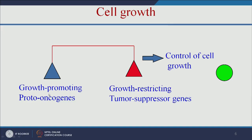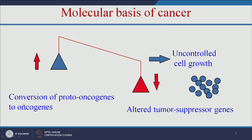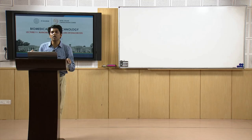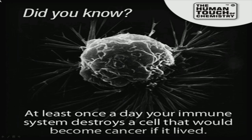Growth-promoting proto-oncogenes and growth-restricting tumor suppressor genes should be properly balanced for control of cell growth. If there is an imbalance, conversion of proto-oncogenes to oncogenes happens and leads to altered tumor suppressor genes, resulting in uncontrolled cell growth — that is called a tumor. If the tumor spreads from one location to another, that is called cancer, and the spreading is called metastasis.